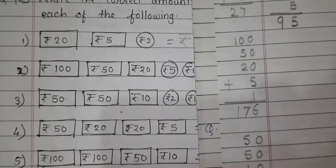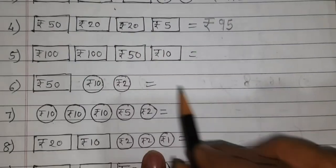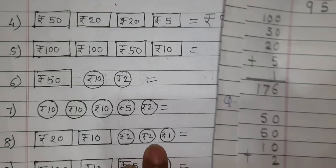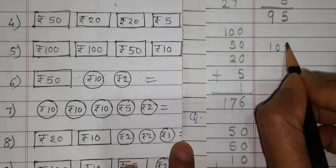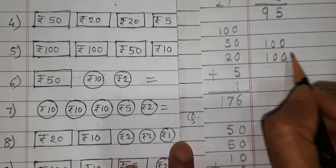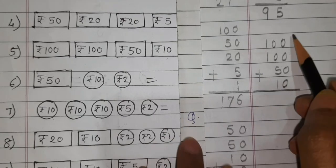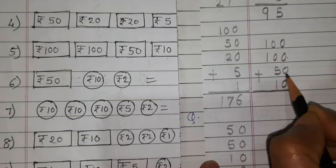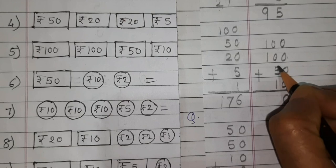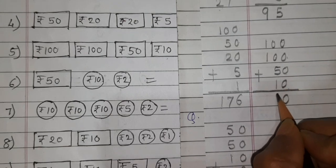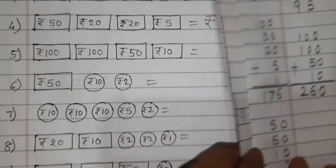Next one: Rupees 100, Rupees 100, Rupees 50 and Rupees 10. Write these on separate paper and add. Ones column: 0. Tens column: 0 plus 5 plus 1 is 6. Hundreds column: 1 plus 1 is 2. So our answer is Rupees 260.